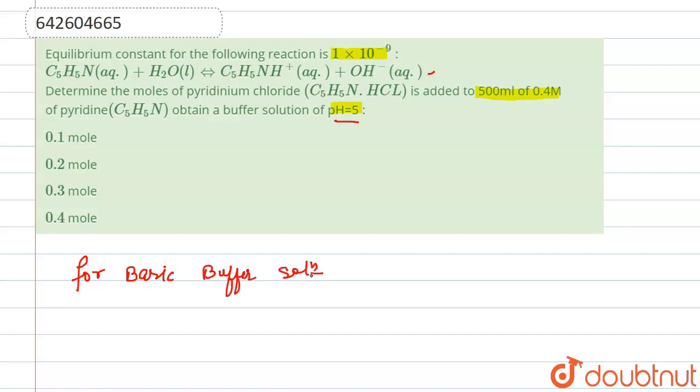For basic buffer solution, we have a formula that pOH equals pKb plus log of salt upon base.